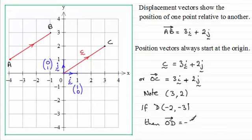-2i minus 3j. Or you could call it simply the vector d. But it would look like this.